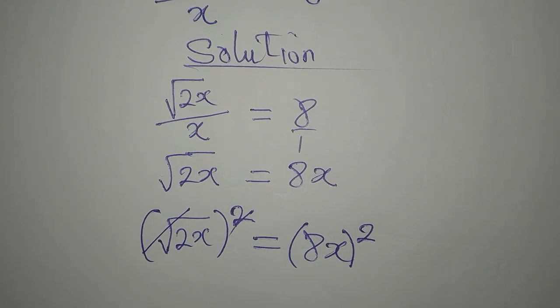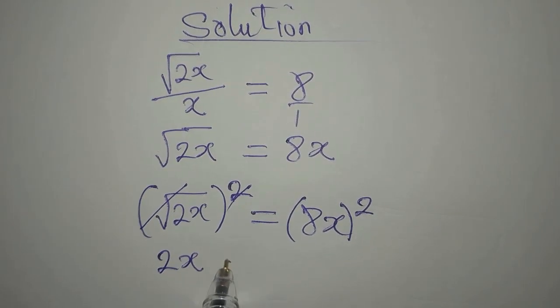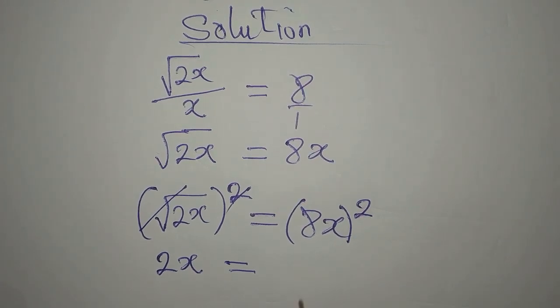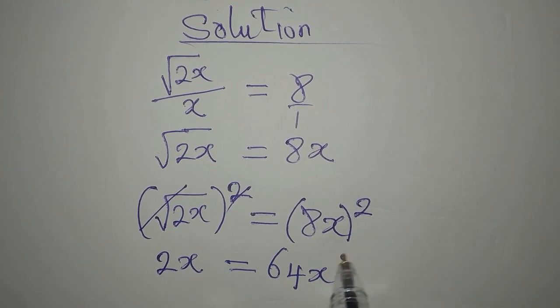This will take this away, so we now have 2x, which is equal to 8x times 8x, that will give us 64x squared.